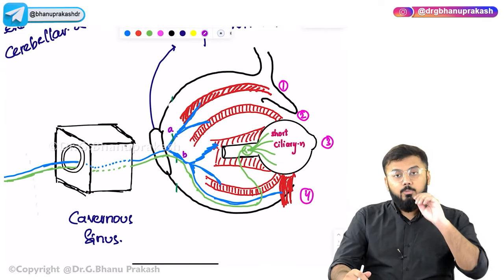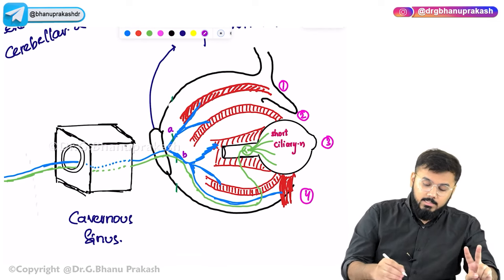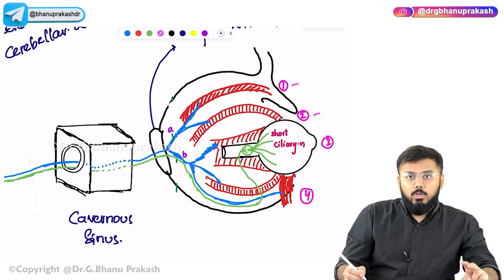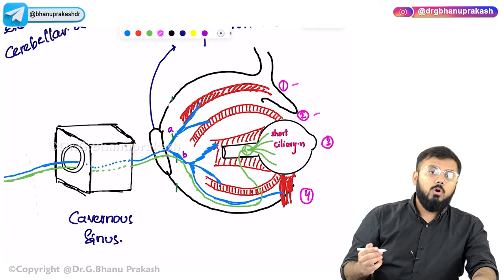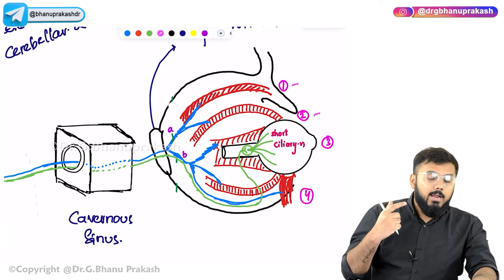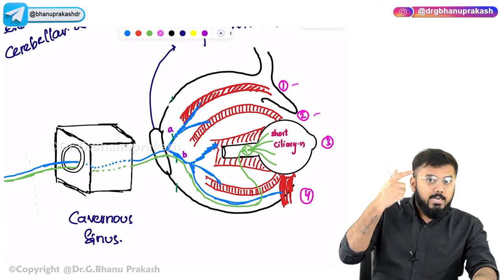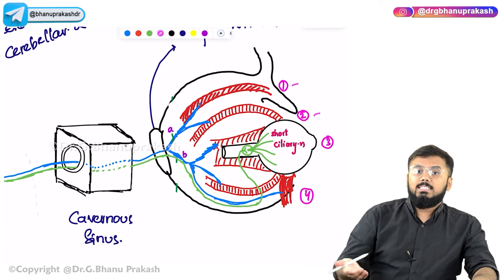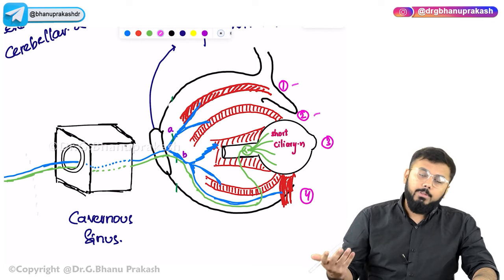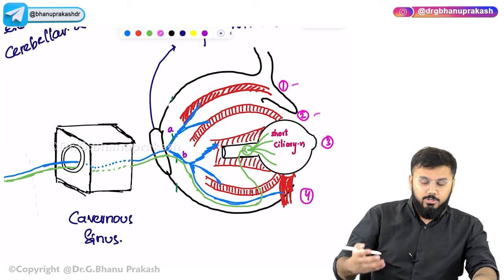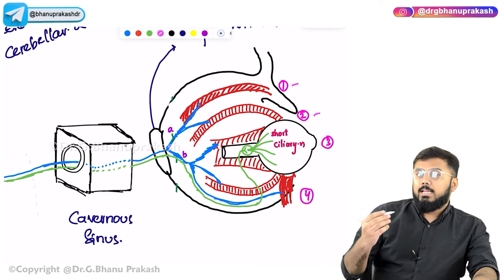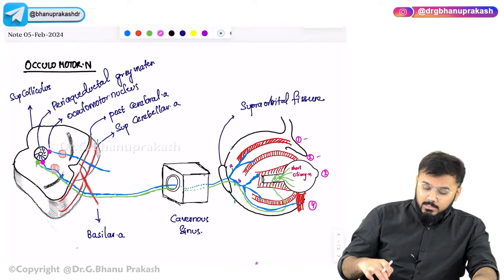The superior division supplies two muscles. First, it supplies the upper eyelid via the levator palpebrae superioris — 'palpebra' means eyelid, 'superioris' is upper, and 'levator' means elevation. Second, it supplies the superior rectus muscle attached to the top of the eyeball.